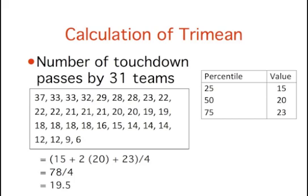Using the formula, we know to first add 15, 2 times 20, and 23, and then to divide this number by 4. This leaves us with a tri-mean of 19.5.